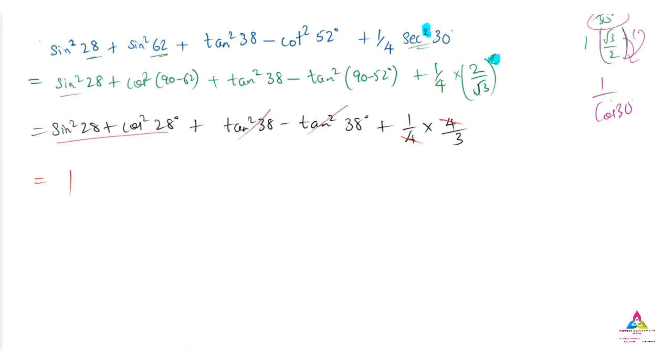Plus one by three we are going to get, and here we have to take the LCM. LCM means three, three plus one, so answer will become four by three because three into one is three and plus one.